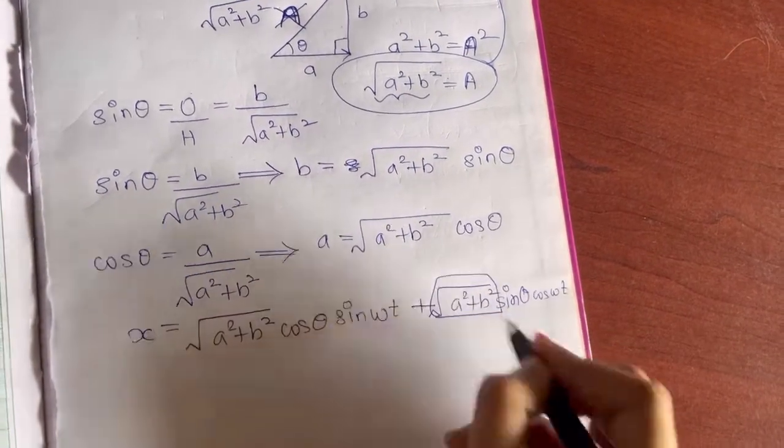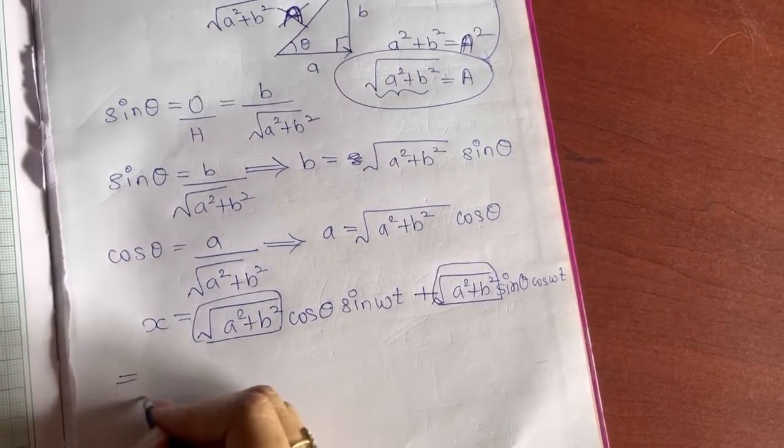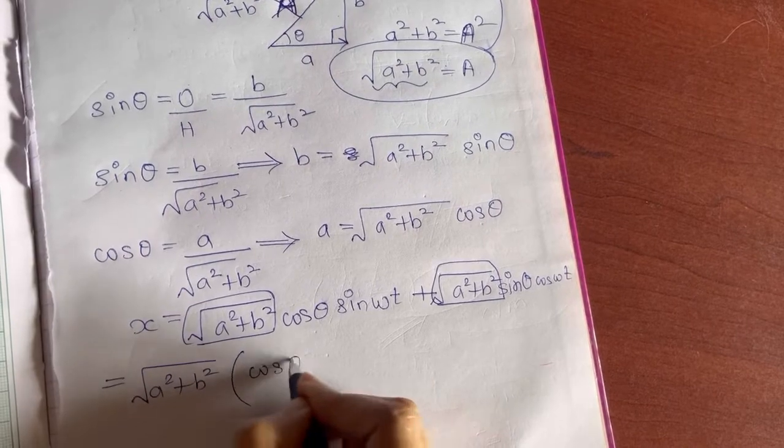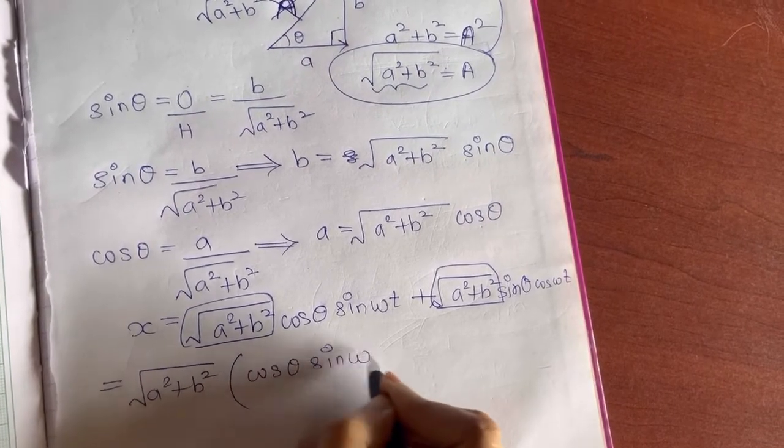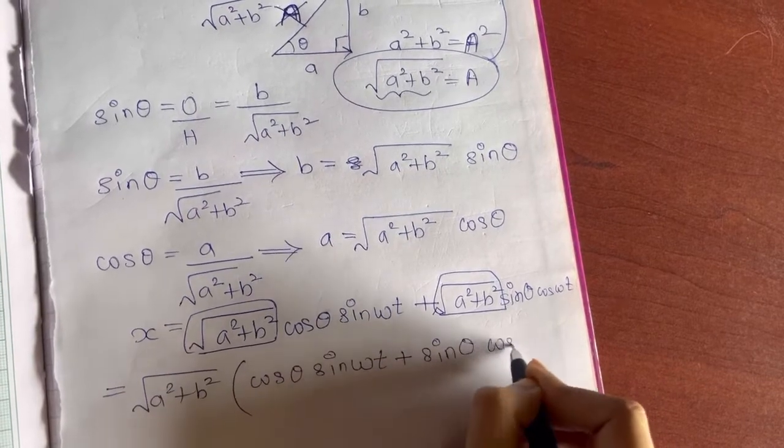If you see √(a² + b²), that is common. So remove that out. Here you will have in the bracket cos θ sin ωt + sin θ cos ωt.